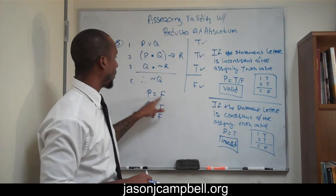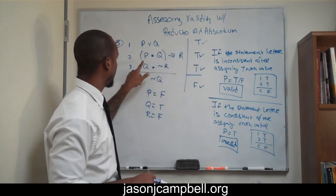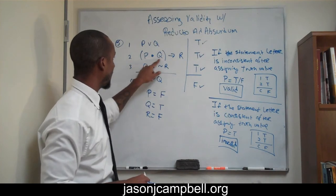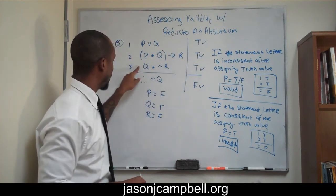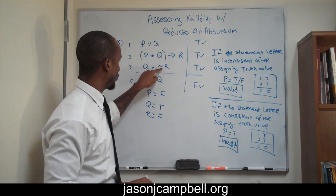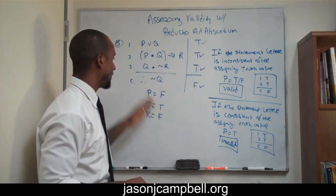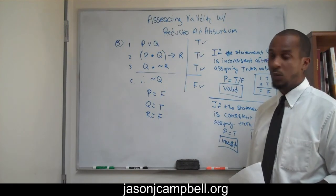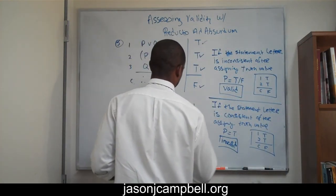Let's substitute: false for P, true for Q, false for R. P or Q: false or true is true. P and Q: false and true is false. If false, then false is true. Q and not R: true and not false is true and true, which is true. And not Q: not true is false. I've substituted those letters in directly without any inconsistency, which means this argument is invalid. Number five is also invalid.